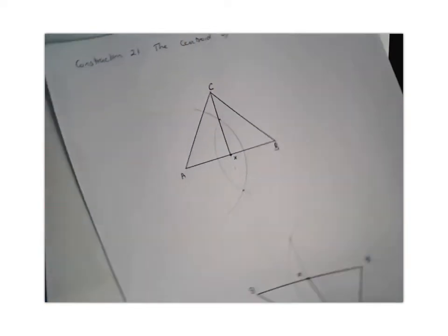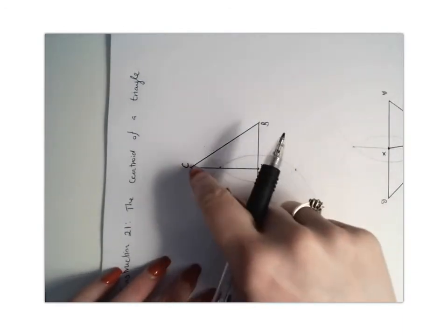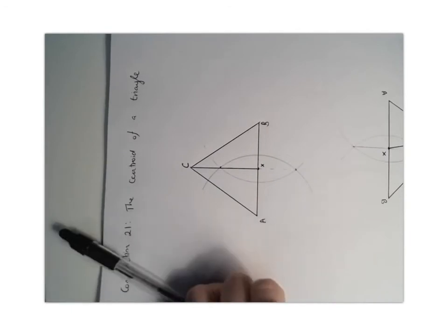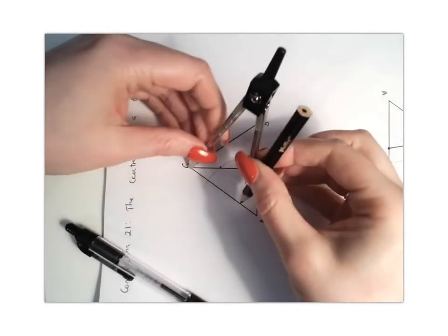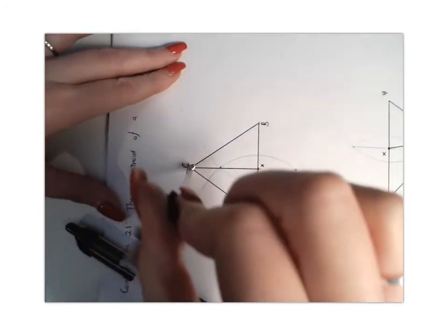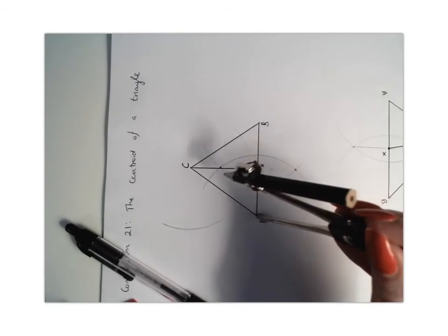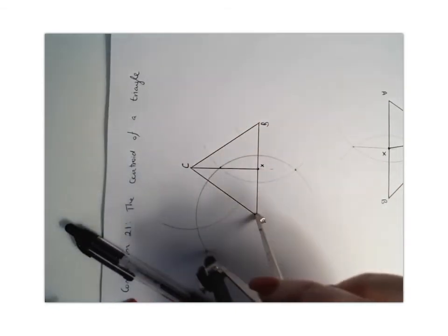So then I'm going to twirl this around, and I'm going to work out the perpendicular bisector of the line AC. So again, I'm going to stretch my compass to more than halfway. I'm going to draw a semicircle, and I'm going to do the same at point A. And I've got my other semicircle.